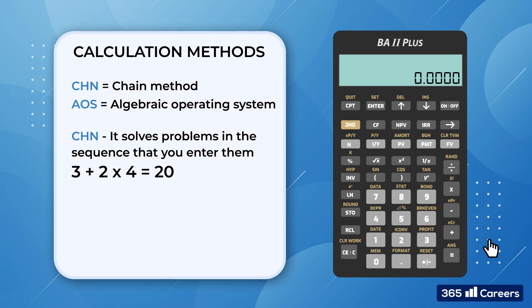For example, when you enter 3 plus 2 multiplied by 4 equals, the answer would be 20, since 3 plus 2 is 5, and 5 by 4 is 20. When we choose the AOS mode, the calculator solves problems according to the standard rules of the Algebraic Hierarchy.